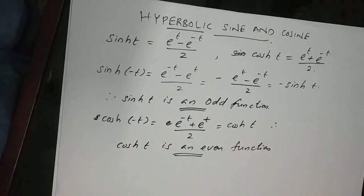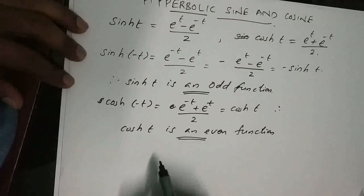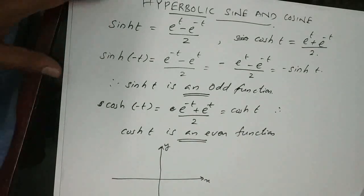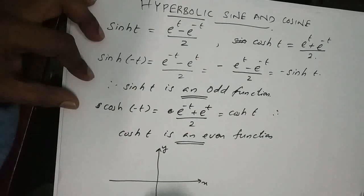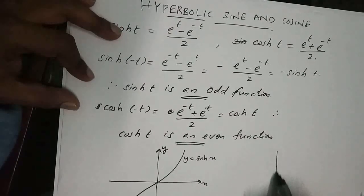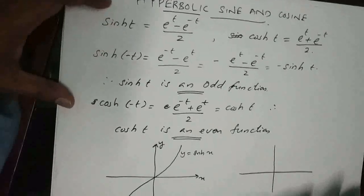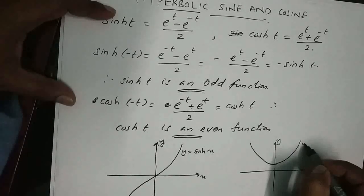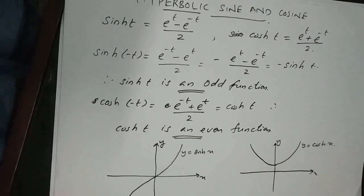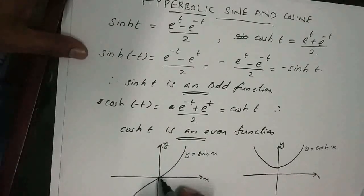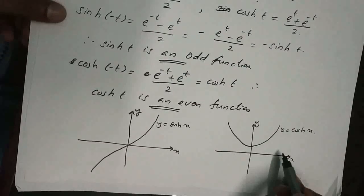Now the graphs of Hyperbolic Sine and Hyperbolic Cosine. The graph of Hyperbolic Sine is like this — this is the X-axis and this is the Y-axis. This is y = sinh(x). Similarly, this is y = cosh(x). From the graph itself we can see that Hyperbolic Cosine is an even function and Hyperbolic Sine is an odd function.